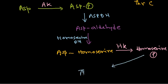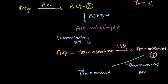This homoserine phosphate is the last intermediate, and from it, threonine is directly produced via the enzyme called threonine synthase. Threonine synthase is the most vital enzyme in this pathway.